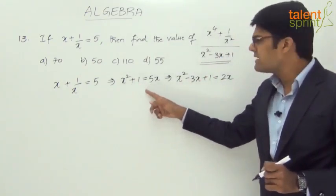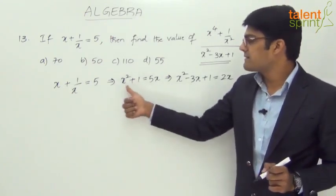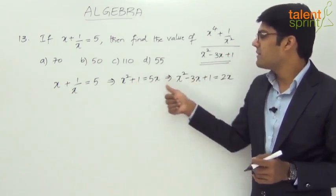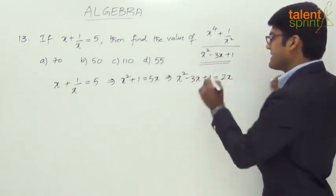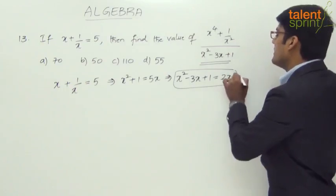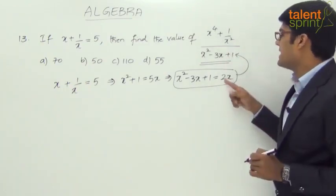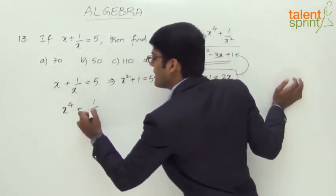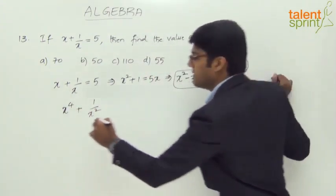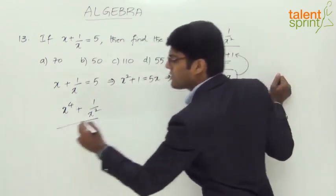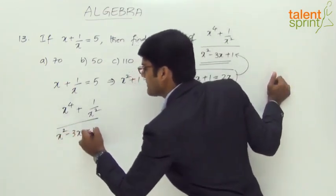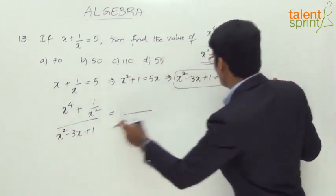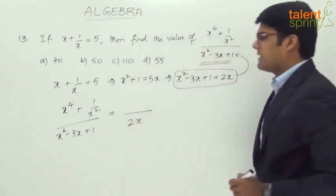First, we get x square plus 1 equal to 5x. Then, it is subtracting 3x on both the sides. Why 3x? Because that is what is given in the denominator. So, x square minus 3x plus 1 equal to 5x minus 3x, 2x. That's it. So, at least the denominator now has become much simpler. We can take it as 2x.